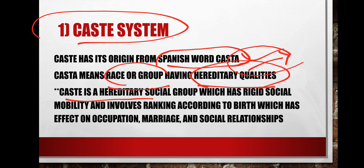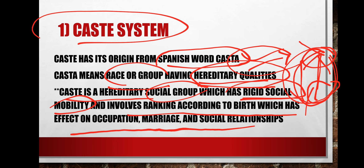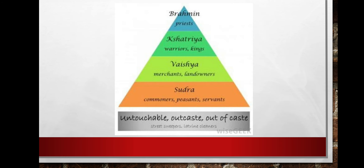Caste is a hereditary social group with rigid social mobility — the upward or downward movement in the caste system is very difficult. It involves ranking according to birth: if you are born in the upper caste you will have a higher rank, and if you are born in the lower caste you will have a lower rank. The caste system affects your occupation, marriage, and social relationships.